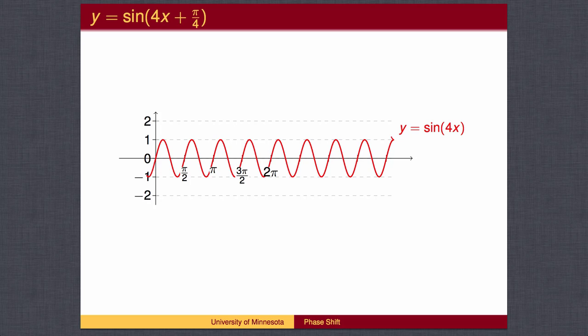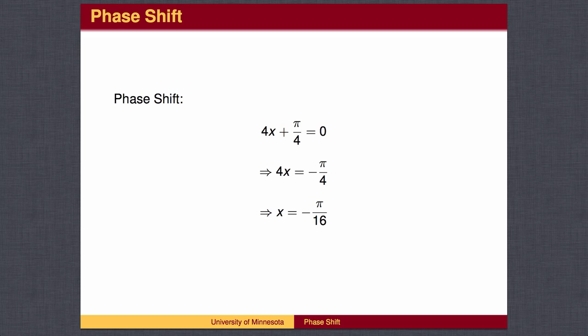The pi over 4 will shift the graph horizontally. This shift is called the phase shift. One way to find the phase shift is to find the value for x that makes the angle 0. In this case, the angle is 4x plus pi over 4. We set the angle equal to 0 and solve for x. The phase shift is negative pi over 16, which will cause us to shift the graph pi over 16 to the left.